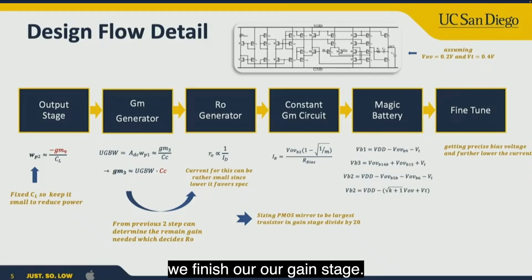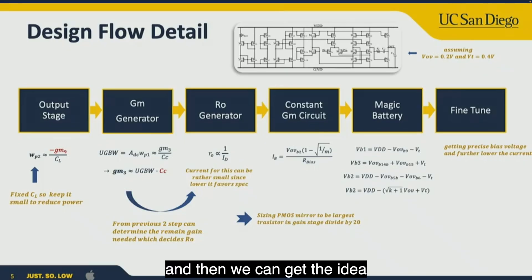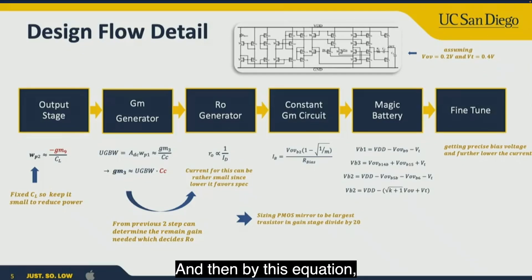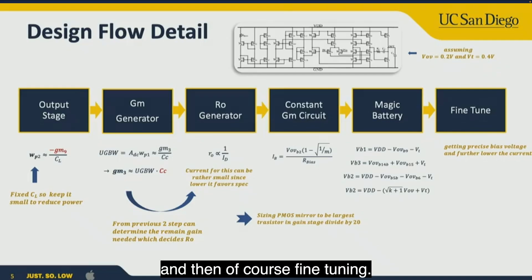After finishing the gain stage design, as mentioned, we divide the largest transistor size by 20 to get the biasing circuit current. Using this equation, we can design the complete circuit and then apply fine tuning.